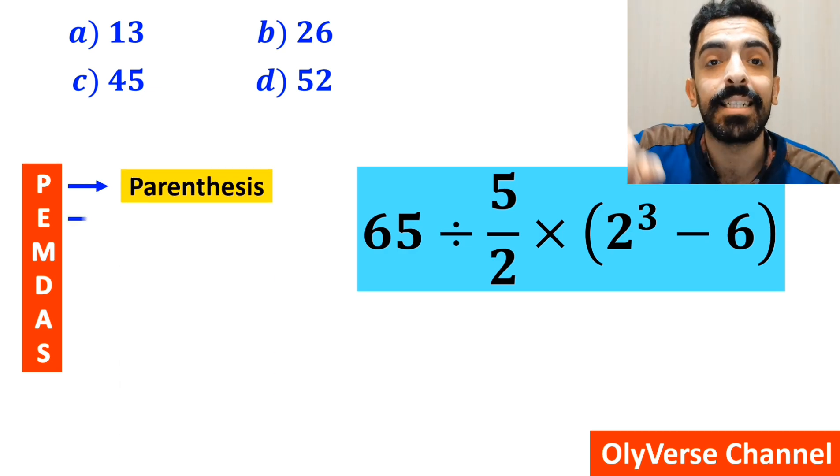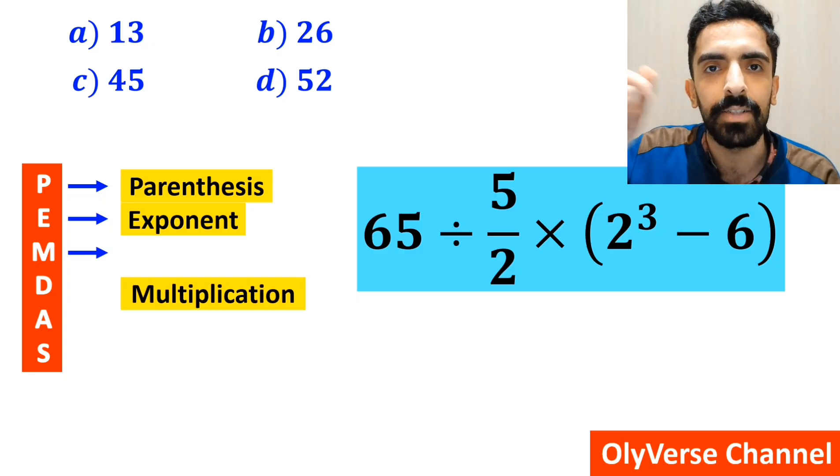In this rule, P stands for parenthesis, E stands for exponent, M stands for multiplication.